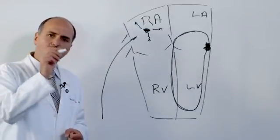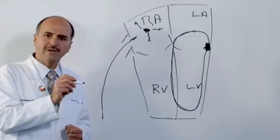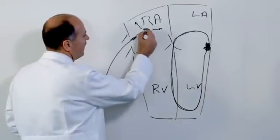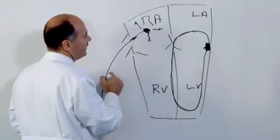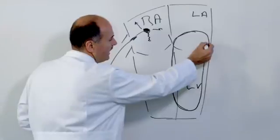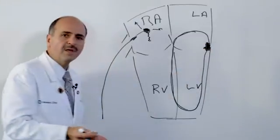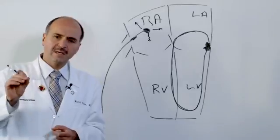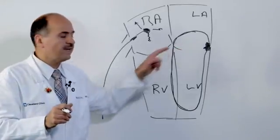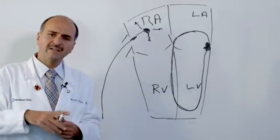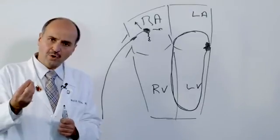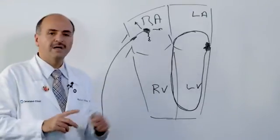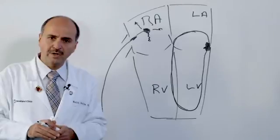And once we see where it's coming from, by mapping the electrical activity, we take the catheter, put it over that area here, or over that extra connection that you have, and we deliver a radiofrequency current that heats up the tissue where the tip of the catheter is, and that can actually damage the heart muscle where that abnormal tissue is and kill it.